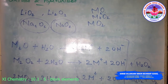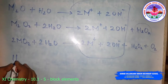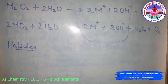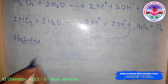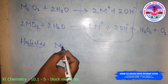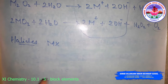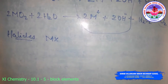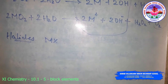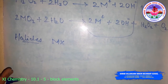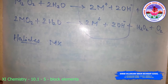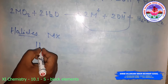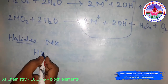Next is the halides. The halides of alkali metals have the general formula MX, where X indicates fluorine, chlorine, bromine, or iodine. They are high-melting, colorless crystalline solids. They can be prepared by the reaction of the appropriate oxide, hydroxide, or carbonate with aqueous hydrohalic acid, that is hydrogen halide.